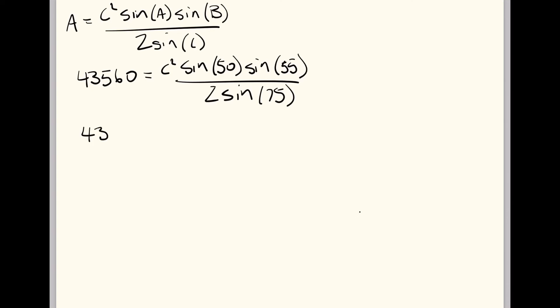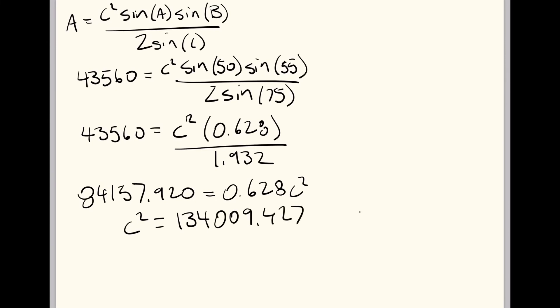Now doing these calculations: 43,560 equals C² times 0.628 all over 1.932. Multiplying through, 84,157 equals 0.628 C². That means C² equals 134,009.427, which makes C equal to 366.073 feet.